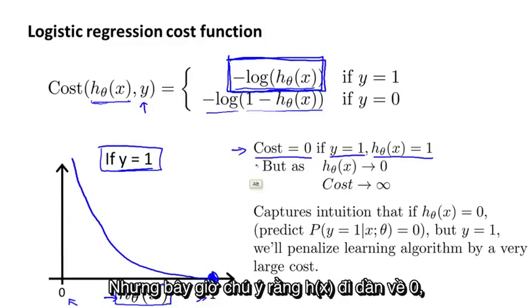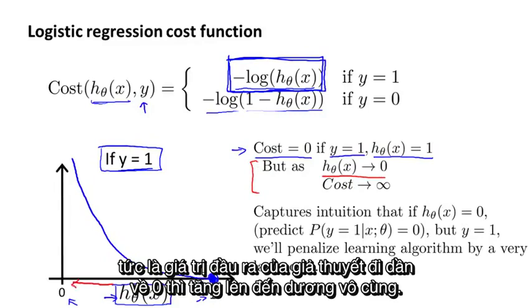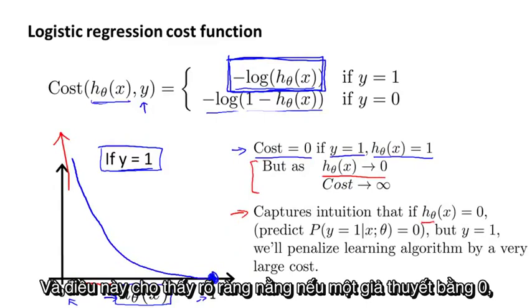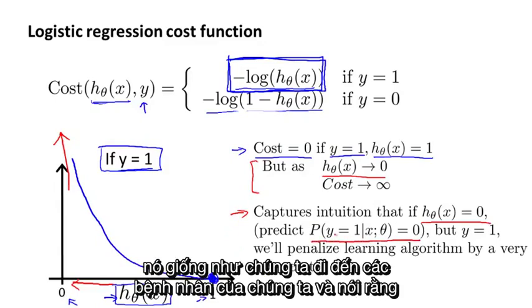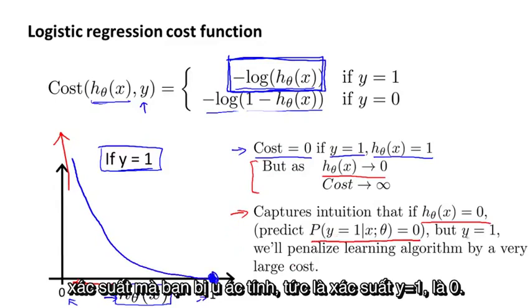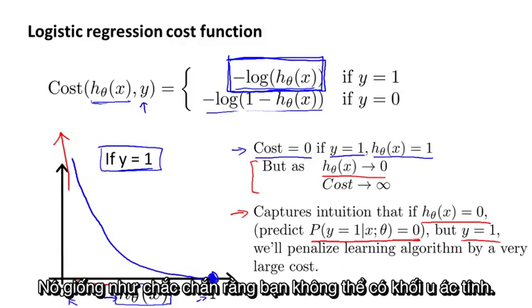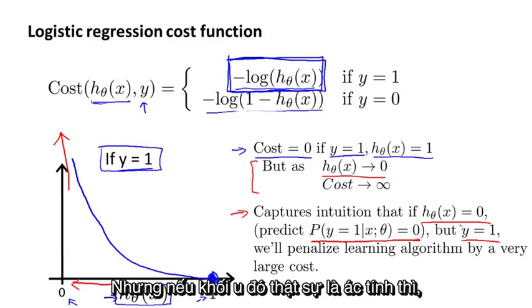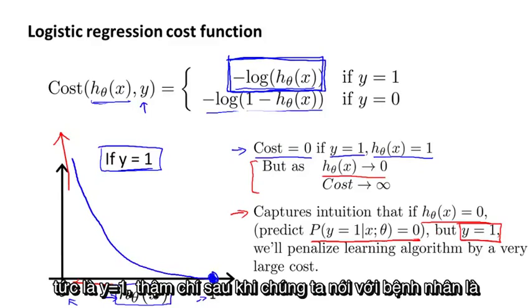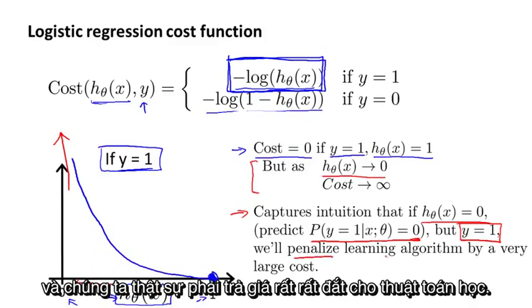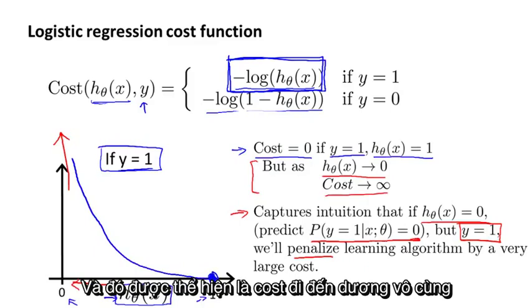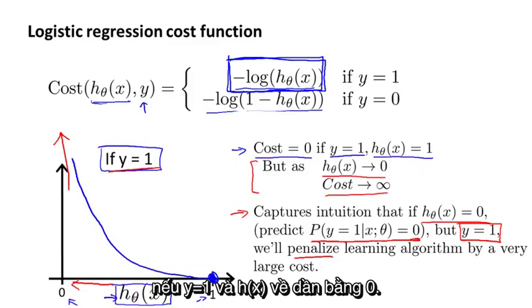Also notice that as h(x) approaches 0, the cost blows up and goes to infinity. This captures the intuition that if the hypothesis outputs 0 — saying the chance of y equals 1 is 0, like telling a patient their tumor is absolutely impossible to be malignant — but it actually turns out to be malignant (y equals 1), then we penalize the learning algorithm with a very large cost. That's captured by the cost going to infinity when y equals 1 and h(x) approaches 0.